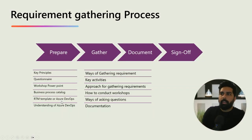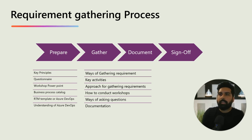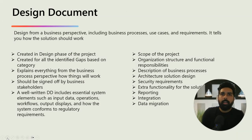Just a recap: once you finish your requirement gathering process — which was divided into different sections — you document and sign off, and receive certain requirements of different categories: integration, functional, reports. You have identified certain gaps, and if a gap is of the type 'report,' then how you are going to design the document for that is the purpose of this particular document.